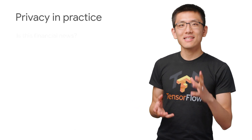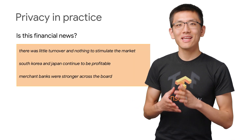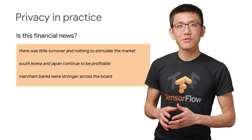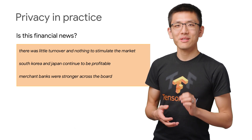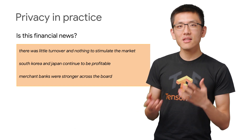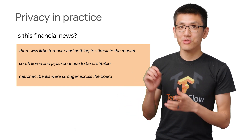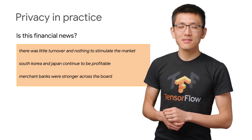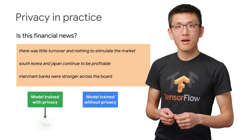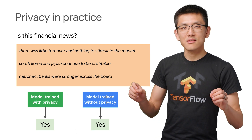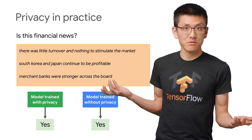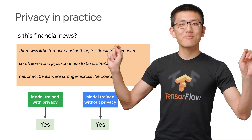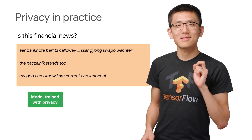Now let's look at an example of what TensorFlow Privacy can achieve. In their blog post announcing the launch, the team highlighted an interesting situation with a language learning model, which is supposed to identify English sentences that look like they come from financial news. With two models side by side — one trained using TensorFlow Privacy and one without — there were many sentences where both models agreed, such as sentences that look like financial news, for example: 'South Korea and Japan continue to be profitable.' But then there were sentences which the models disagreed on.